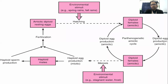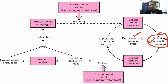In the amictic life cycle, females have diploid eggs produced through modified meiosis, which are called amictic eggs. This is called a parthenogenetic or asexual cycle, also known as the amictic cycle. In this case, from the diploid egg, only diploid females develop.